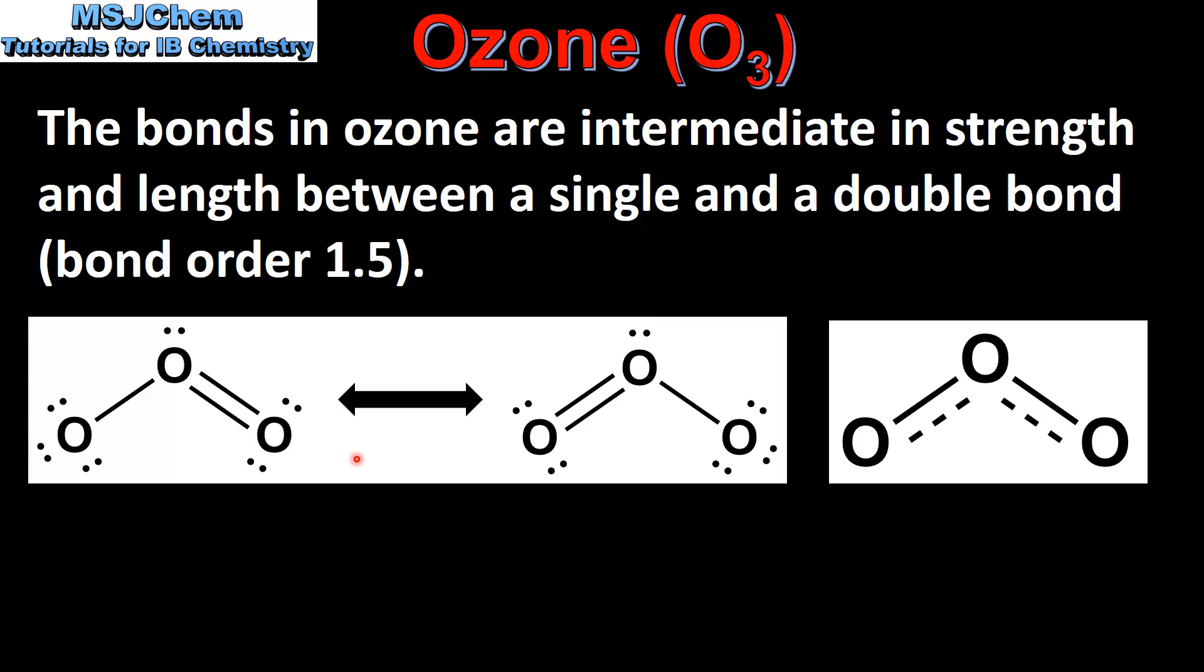Here on the left we can see the resonant structures of ozone. Note that there are two resonant structures because there are two different positions in which the double bond could be.